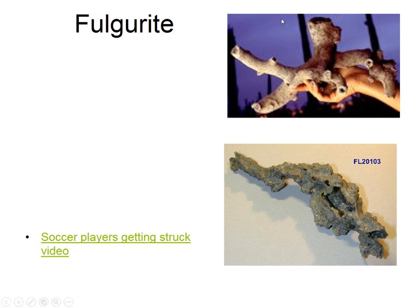These are called fulgurites — this is what happens when a lightning bolt hits sand. Since lightning is nearly 50,000 degrees, it melts the sand into glass, which is called a fulgurite. What's important to note about it is how wide a lightning bolt actually is. When we see a lightning bolt, it seems really wide because it's so bright, but lightning bolts are only about an inch wide — they just appear much wider because of their brightness.